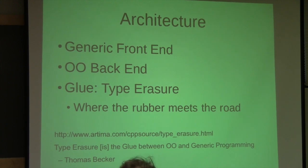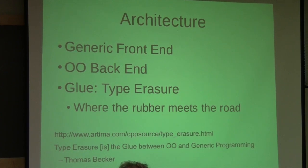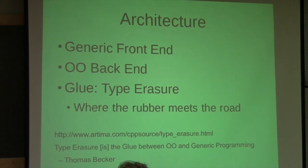So we have a generic frontend and an object-oriented backend. When the generic frontend has a very flexible interface that can return anything, whereas the OO backend has a rigid interface - that's the main problem with inheritance-type design: the base class specifies the interface and you're done. How do you connect the two? The answer is Boost.Any. This is where Boost.Any shines. Type erasure is the glue that connects a generic interface to an object-oriented interface. Thomas Becker said it: 'Type erasure is the glue between OO and generic programming.'